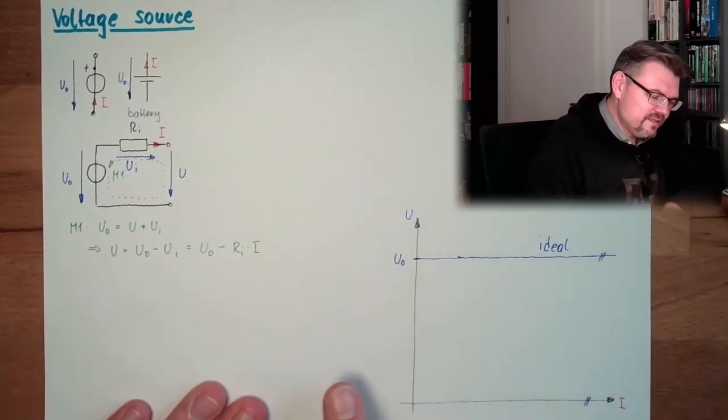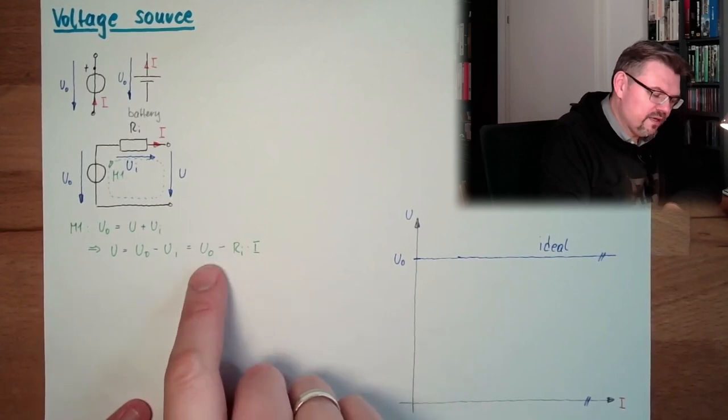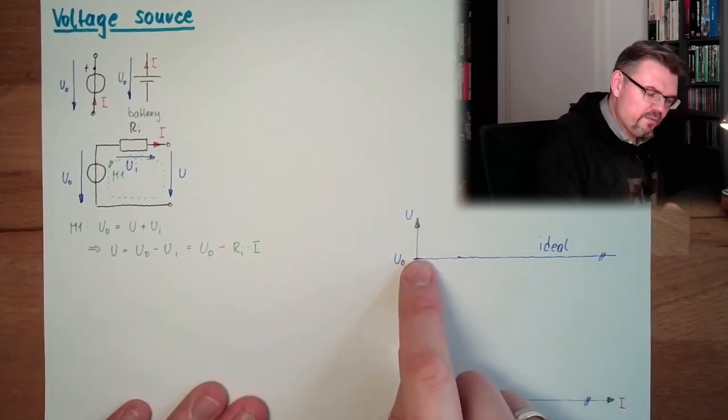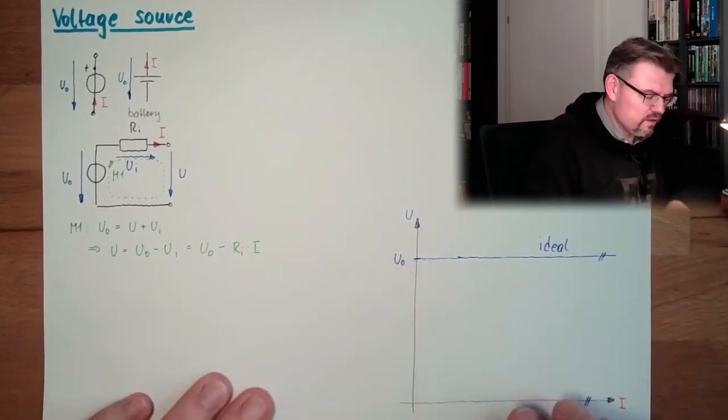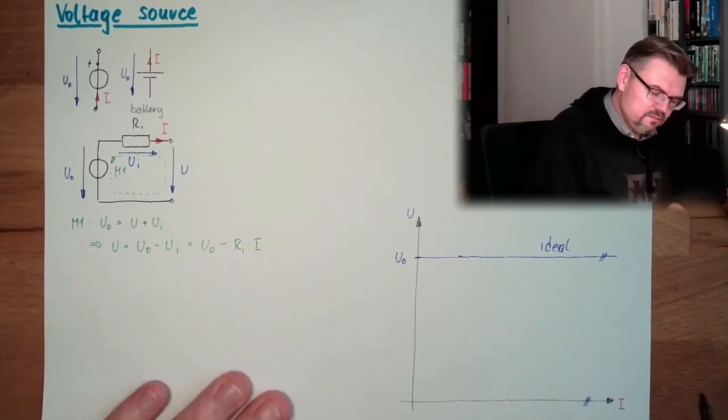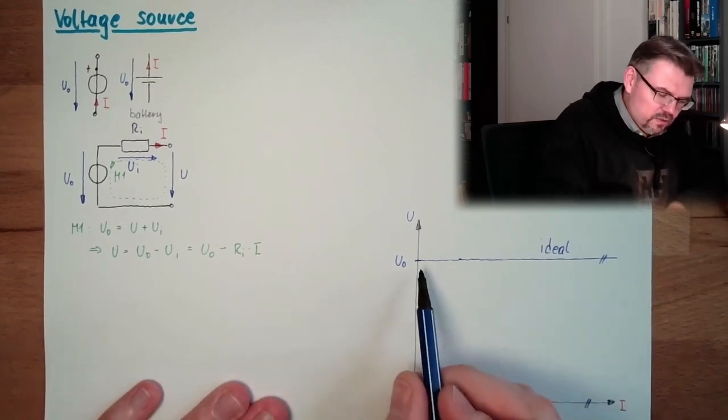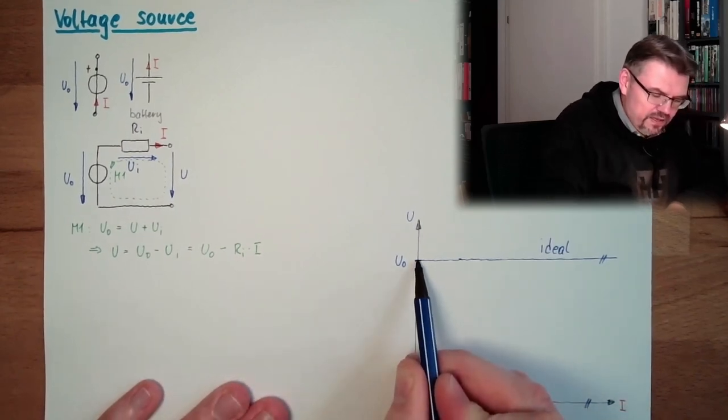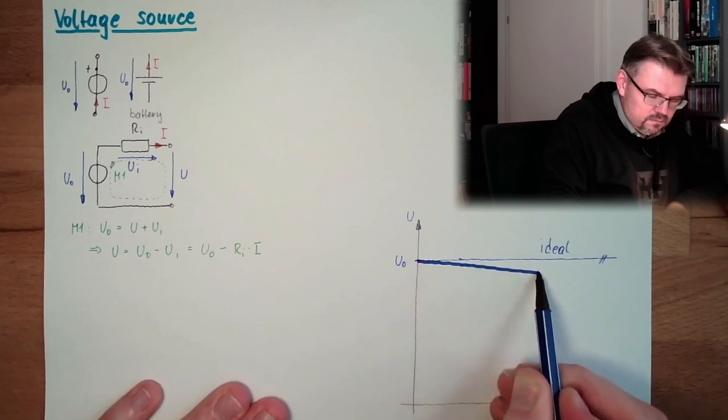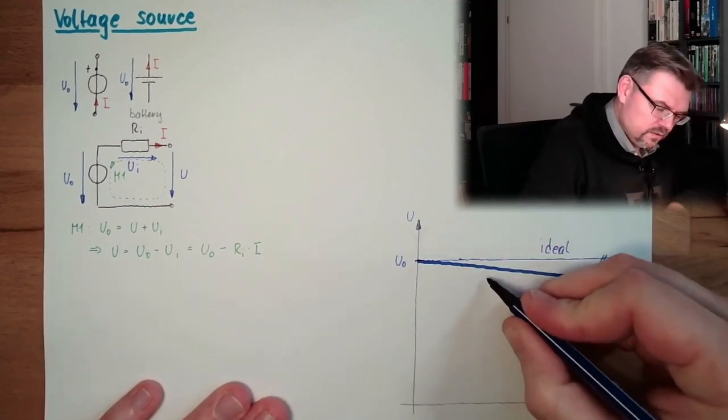And you see, it's linear. So we're starting at current zero, we start at U0 here. And the bigger the current is, the more the voltage is dropping. So, a real behavior, and now I take the big band, because this is what is actually happening. Real. It's linear. But dropping. This is real.